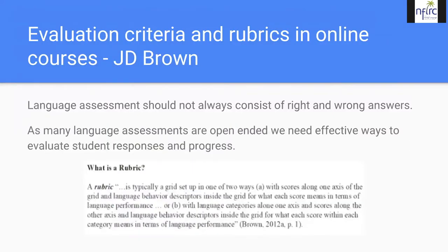In our next session with JD Brown, we looked at evaluation criteria and rubrics in online courses. Language assessment should not always consist of right and wrong answers. Unlike math, language assessment is very open-ended, so we need effective ways to evaluate student responses. A rubric is a grid set up with scores along one axis and language behavior descriptors inside the grid for what each score means in terms of language performance, or with language categories on one axis and scores along the other.